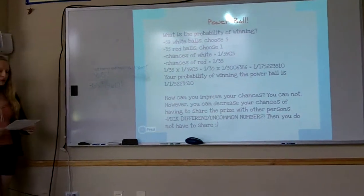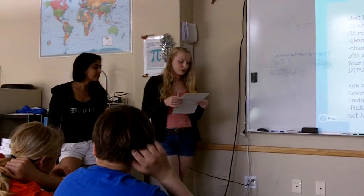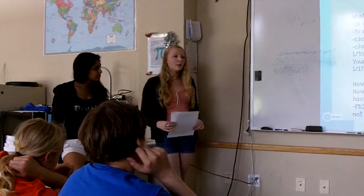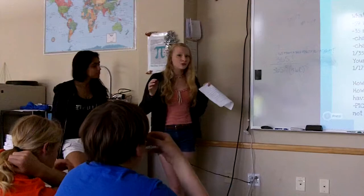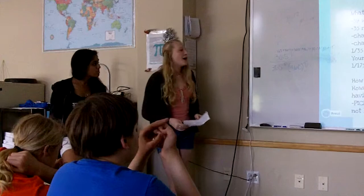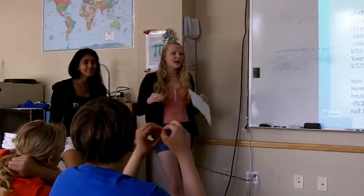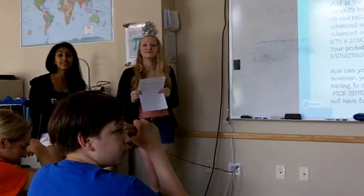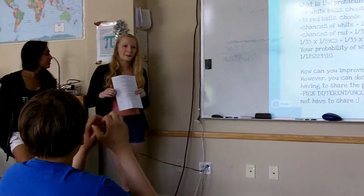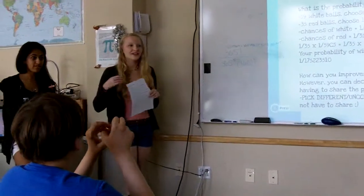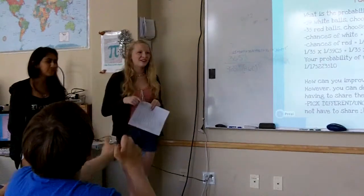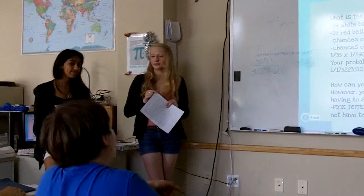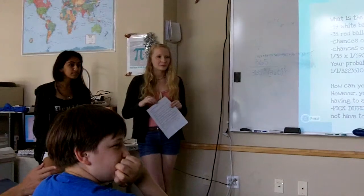How can you improve your chances? You can't. But if you choose the same numbers as somebody else and you both win a certain amount of money, you have to split that. So how can you decrease your chances of doing that? If you pick different or uncommon numbers, then you don't have to share the money that you win. Recently, a bunch of people picked the same six numbers: 22, 28, 32, 33, 39, and 40. They all won a certain amount of money, but they had to split it a whole bunch of ways. The Powerball actually thought that these people all cheated, because how can this many people get so much money and they all picked the same numbers? So they thought that they cheated somehow.